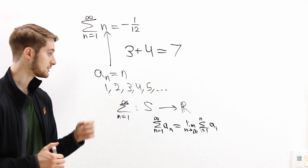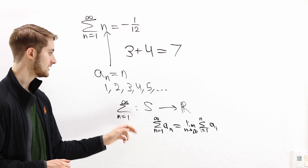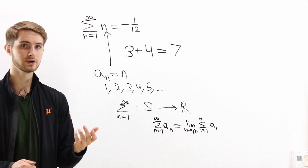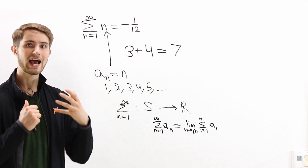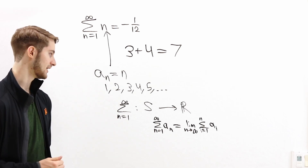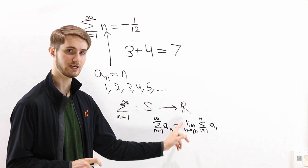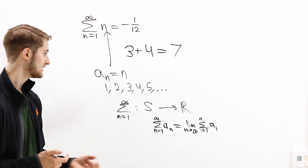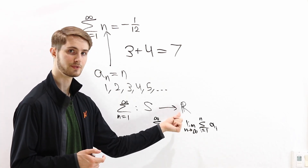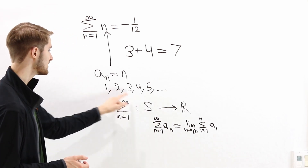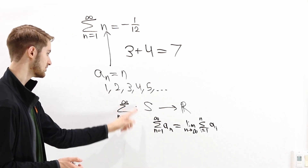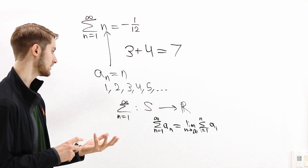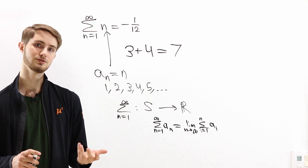Sometimes I hear people say that the problem when arguing about infinite sums is the question of what we mean by 'equals.' But the idea of equality is a very deep axiomatic foundation for mathematics and it's not something that people usually change. The thing that's really affecting us when we argue about infinite sums is not the equal sign — the question is really what function you're using that takes sequences to real numbers. That's the thing you have to get clear when talking about the values of an infinite sum.